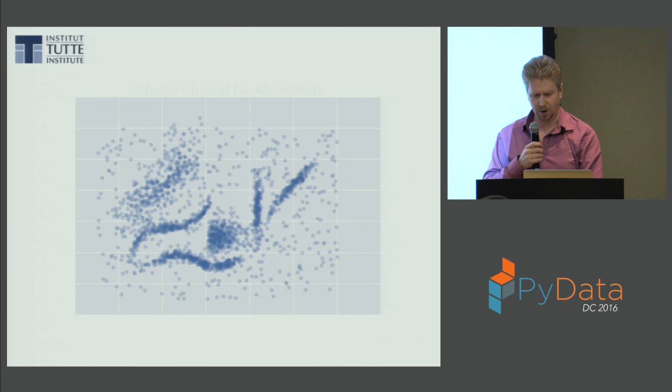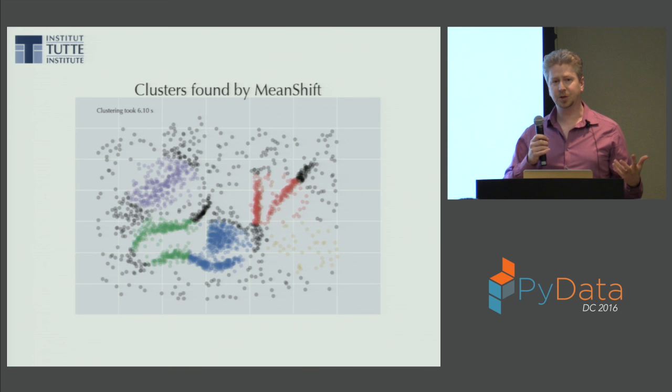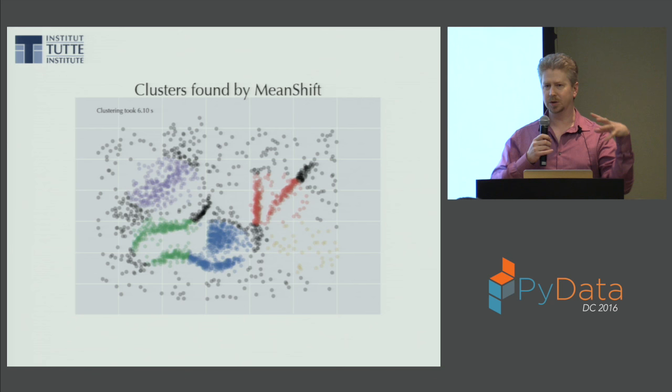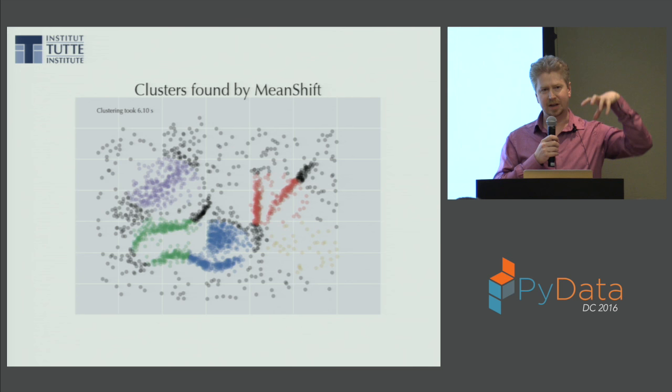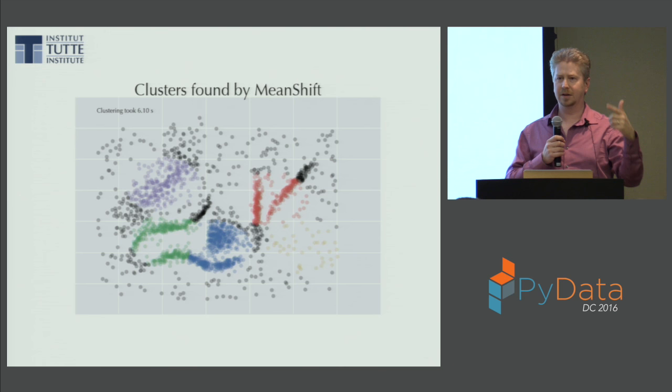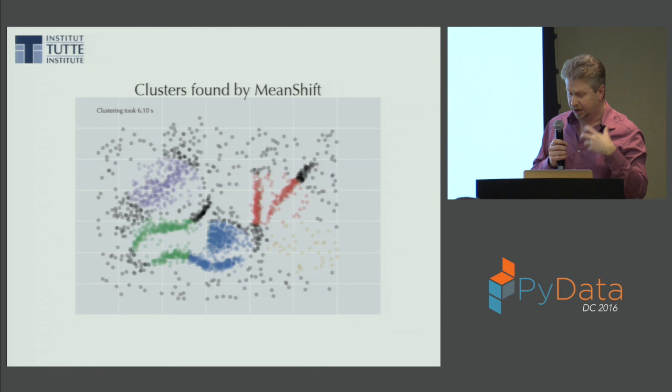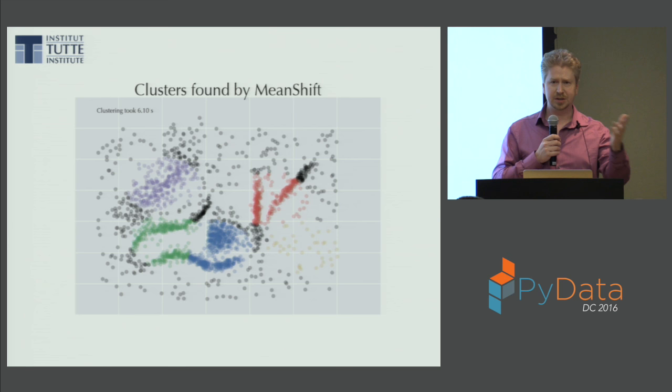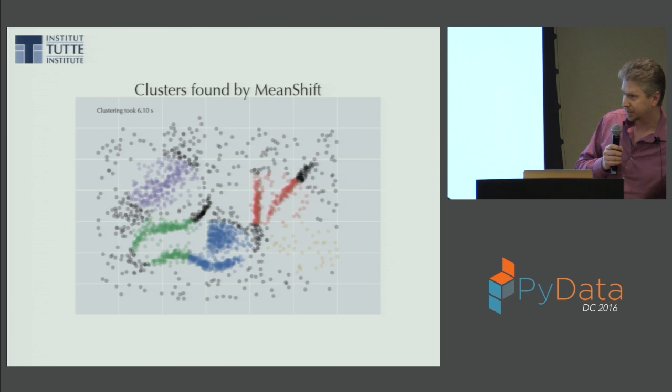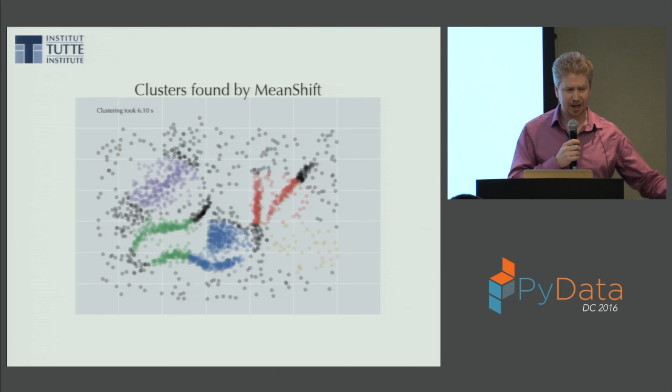Mean shift is an interesting algorithm. You initialize your space with k centroids, estimate the local density around each, and each centroid does a hill climb to the local maxima — finding modes or regions of high density. Points in low-density areas become noise points, which is great: it handles noise and doesn't require all data to be within a cluster. Unfortunately, you still have the spherical cow assumption — you still have balls in your space.